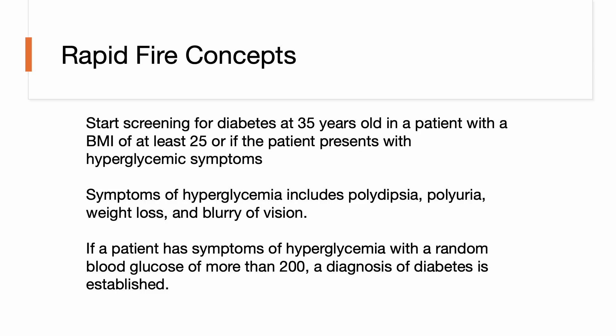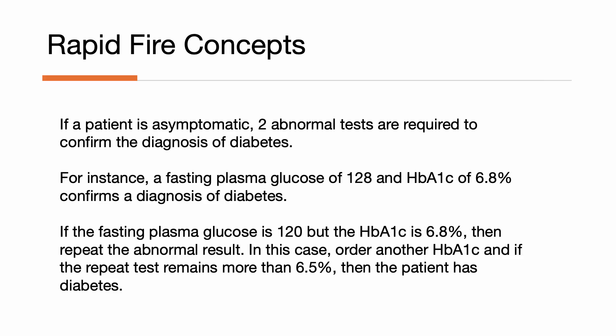Here are some high-yield concepts for diabetes. Start screening at 35 years old in a patient with a BMI of at least 25, or screen if they present with hyperglycemic symptoms including polydipsia, polyuria, weight loss, and blurry vision. If a patient has symptoms of hyperglycemia with a random blood glucose of more than 200, a diagnosis of diabetes is established. If a patient is asymptomatic, two abnormal tests are required to confirm the diagnosis — for instance, a fasting blood glucose of 128 and a hemoglobin A1c of 6.8% confirms diabetes. If the fasting plasma glucose is 120 but the A1c is 6.8%, repeat the abnormal result; if the repeat A1c remains more than 6.5%, the patient has diabetes.